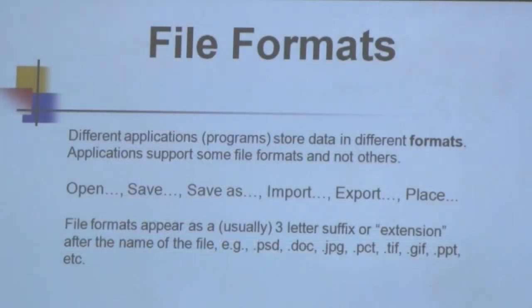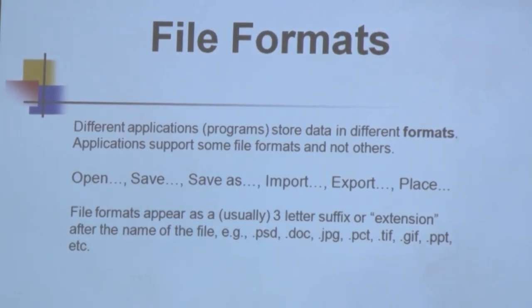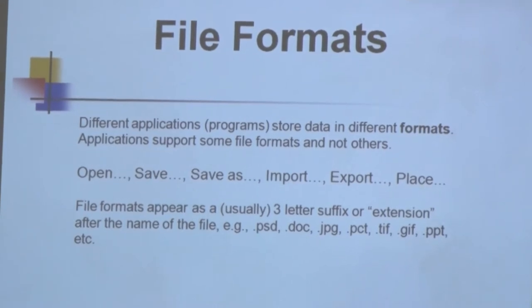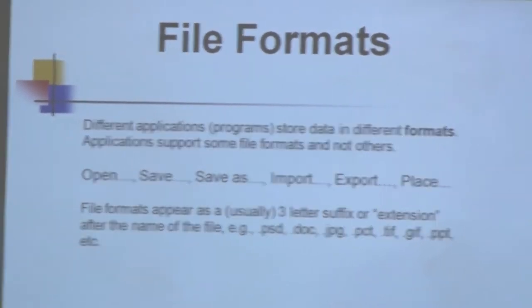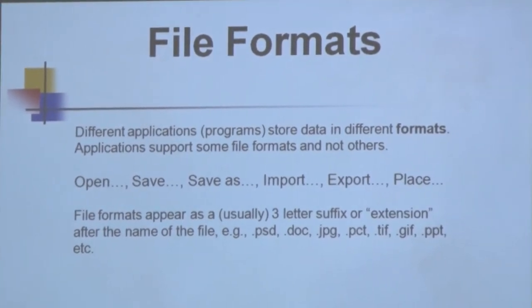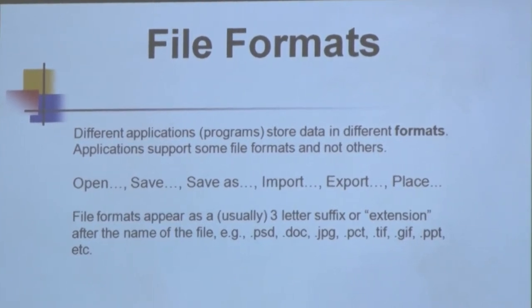Different applications store data in different formats. An application supports some file formats and not others. You can open a file and save, save as, import, or export using different file formats. The file format usually appears as three letters after your file name — like .pdf, .doc, .tif, .jpg, .png, and so on.